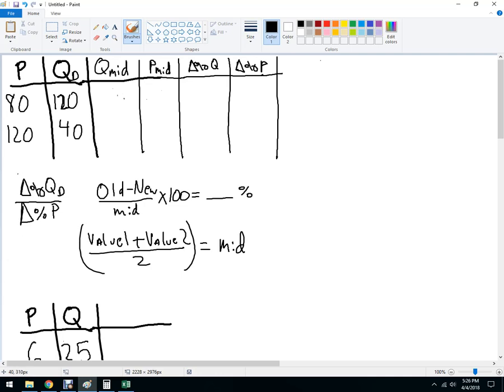The formula for elasticity is right here. So it's the change in quantity as a percent over the change in price as a percent. The way to get the percent change formula is right here - we go old minus new over the midpoint, multiply that by 100. This gives us the percent. The way to get the midpoint: value 1 plus value 2 divided by 2, or really half of the total. Either way, this will give you the midpoint.